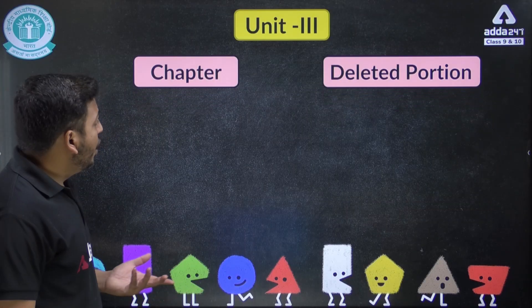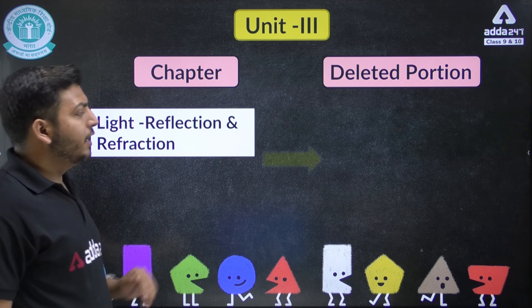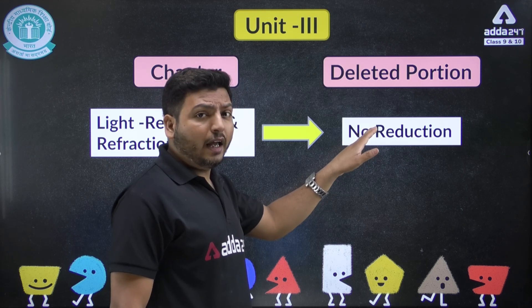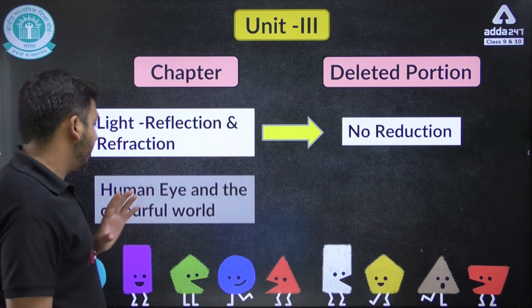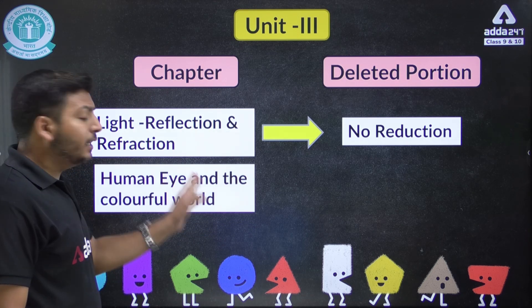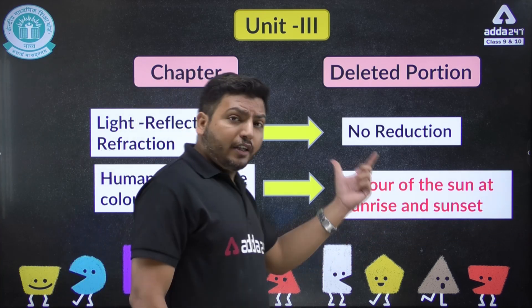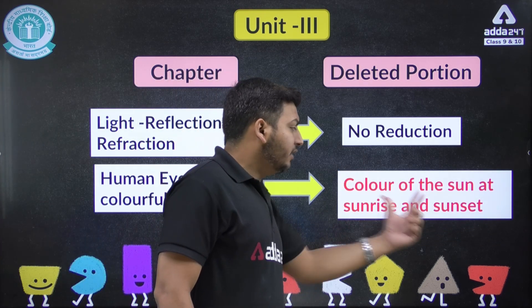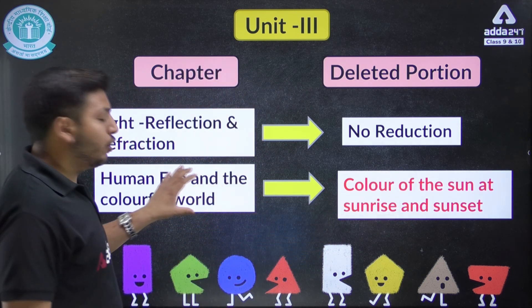In Unit 3, Light — Reflection and Refraction — has no reduction; everything will come and you have to read the whole chapter. The next chapter, Human Eye and the Colourful World, has one deleted topic: the color of the sun at sunrise and sunset — that topic is deleted. The rest of the chapter will be asked.